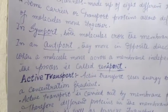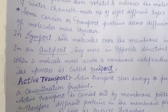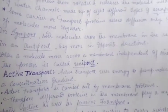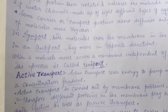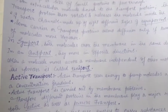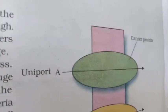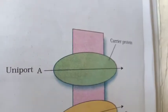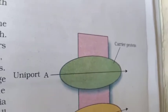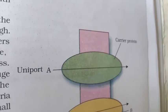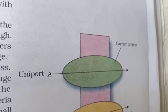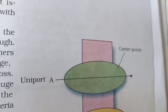In uniport, a single molecule moves across a membrane independently of any other molecule. The process is called uniport — a single molecule carried through the carrier protein independently.